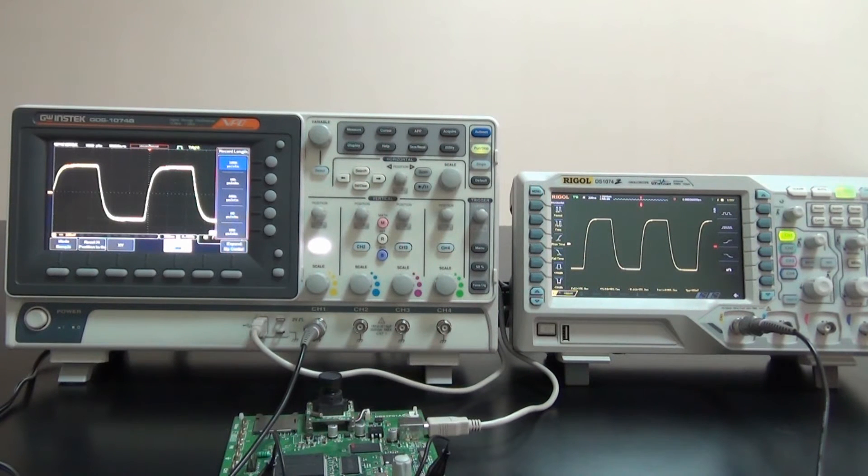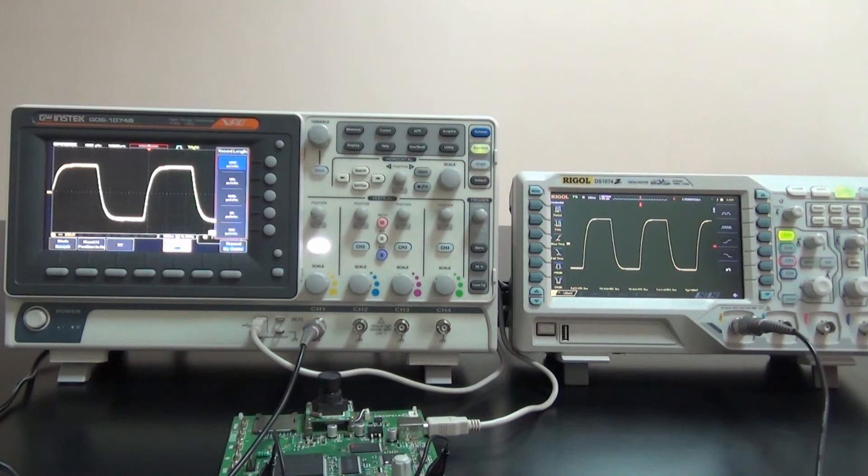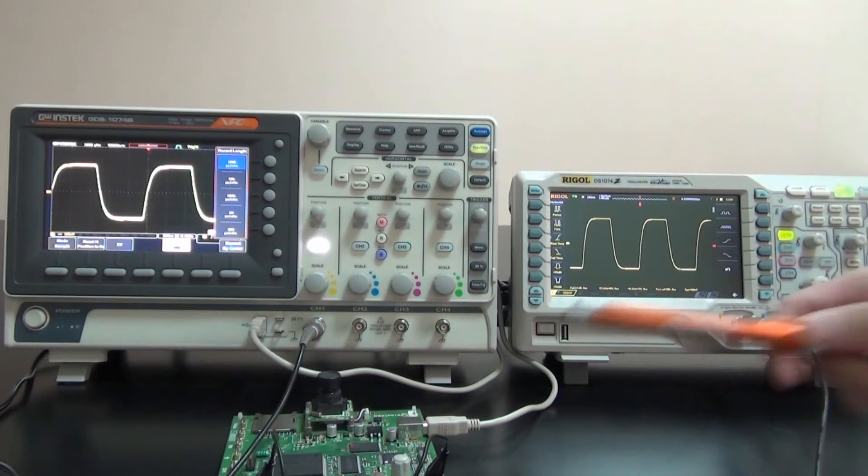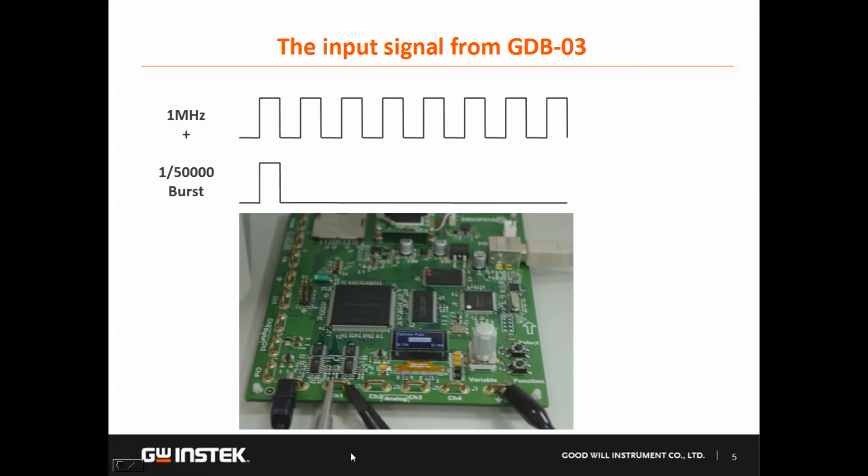Now let's compare the difference between GDS-1074B and DS-1074Z. This demo board GDB-03 is used to generate a mixed signal which includes a continuous signal and a burst signal.